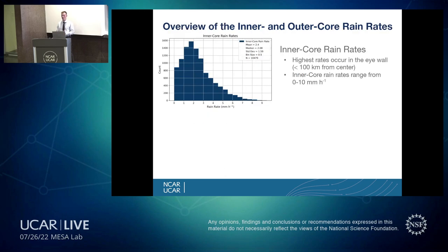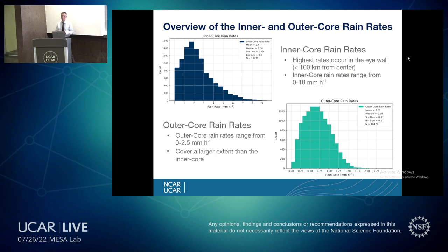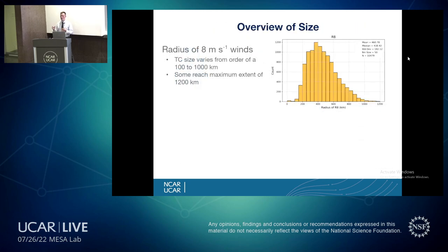Looking at summary statistics: inner core rain rates are highest in the eyewall region, ranging from 0 to 10 millimeters per hour in our composites — much larger than outer core rain rates, which range from 0 to 2.5 millimeters per hour but cover a much larger extent, like spiraling rain bands. For size, tropical cyclones vary just as they do in nature, ranging from about 100 to 1,000 kilometers. Some reached our maximum study extent of 1,200 kilometers.